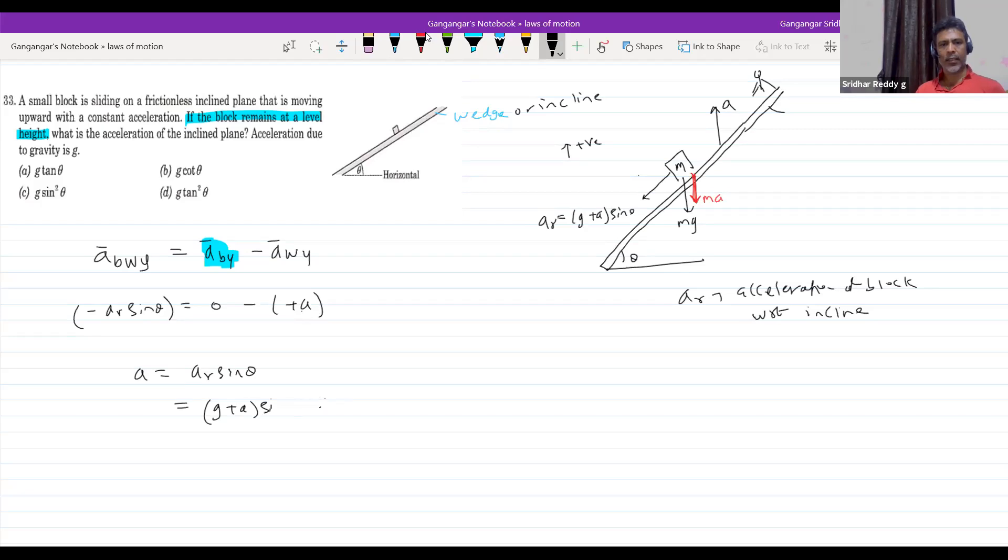g plus a sin theta into sin theta, this will be g sin square theta plus a sin square theta. One minus sin square theta is equal to g sin square theta. What is one minus sin square theta?